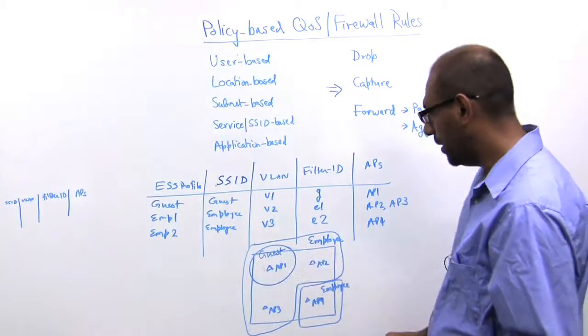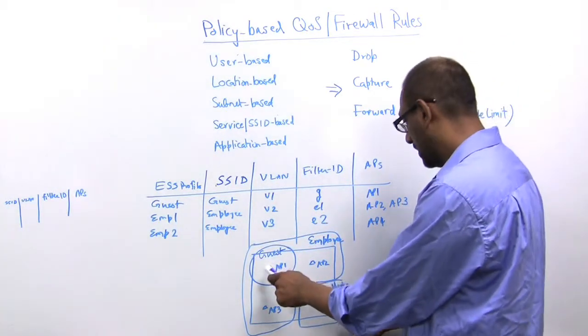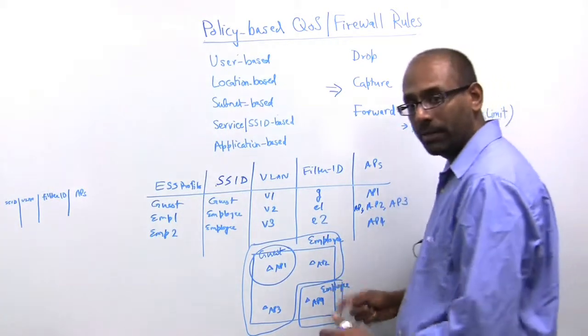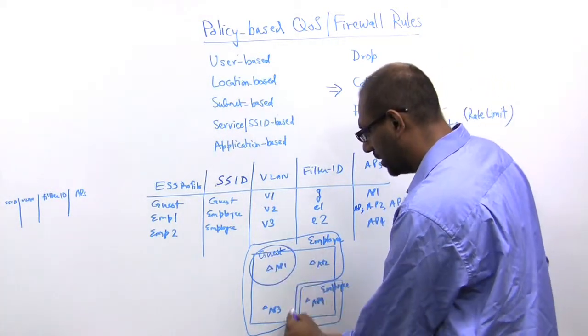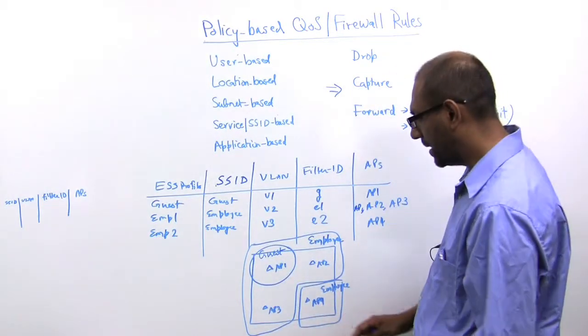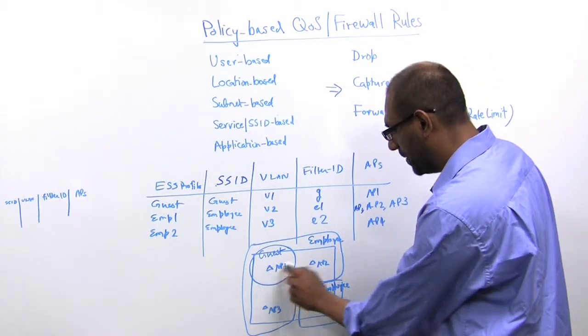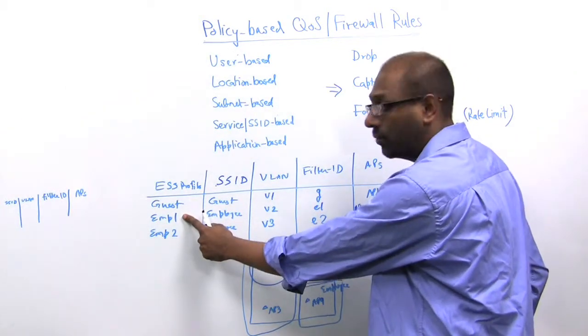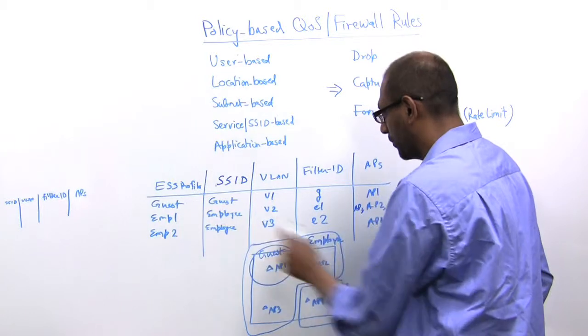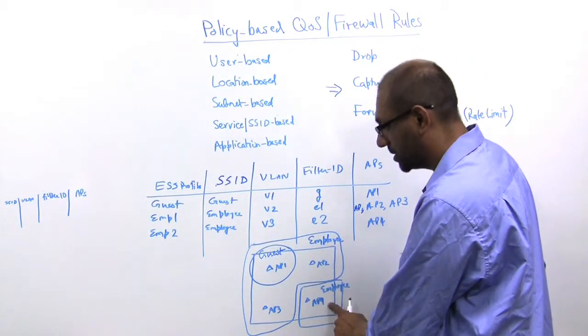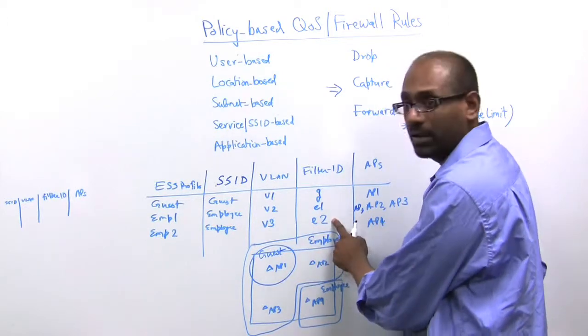If you're an employee, you'll be able to connect pretty much everywhere. If you're an employee, you'll be able to connect to the SSID anywhere in the region except that if you connect in the region of AP1, AP2, AP3, you get tagged according to the employee 1 service ESS profile which gives you a filter ID of E1. If you connect in this region, AP4, you'll get tagged with E2.